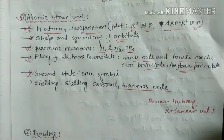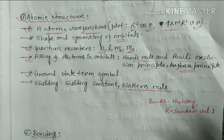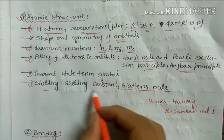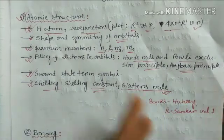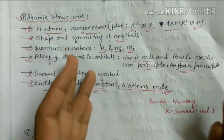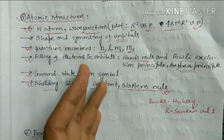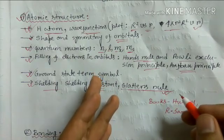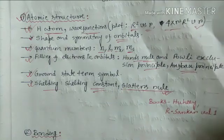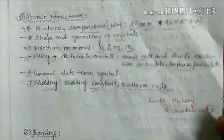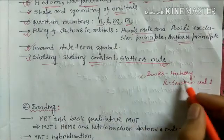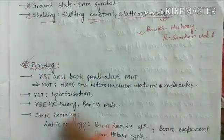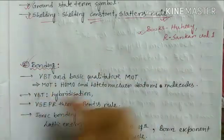Questions come in the exam where they give you an atom and you have to determine the ground state term symbol. After that, shielding and the shielding constant and Slater's rule — Slater's rule is very important. They can ask you to determine the effective nuclear charge, or give you the shielding constant and ask you to apply Slater's rule. All these things you can get from Wee book or R. Shriver, Volume 1.